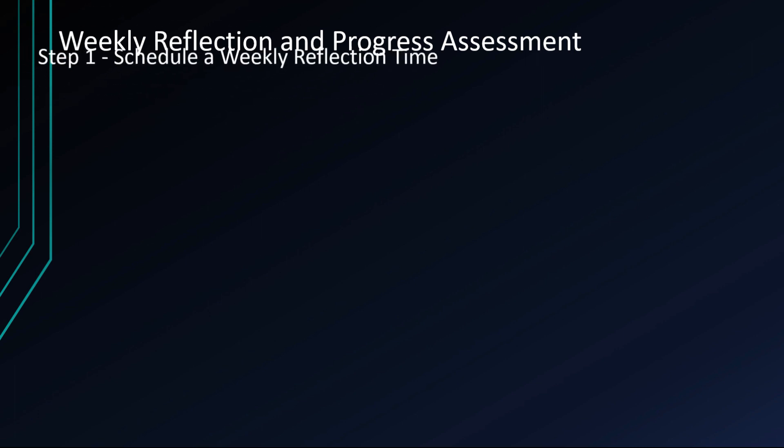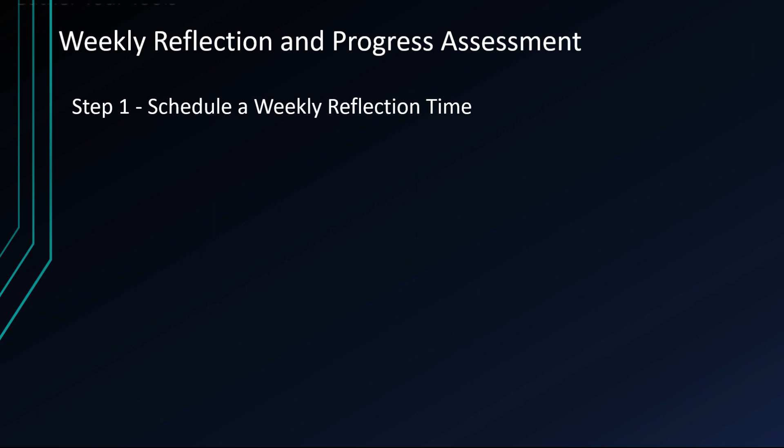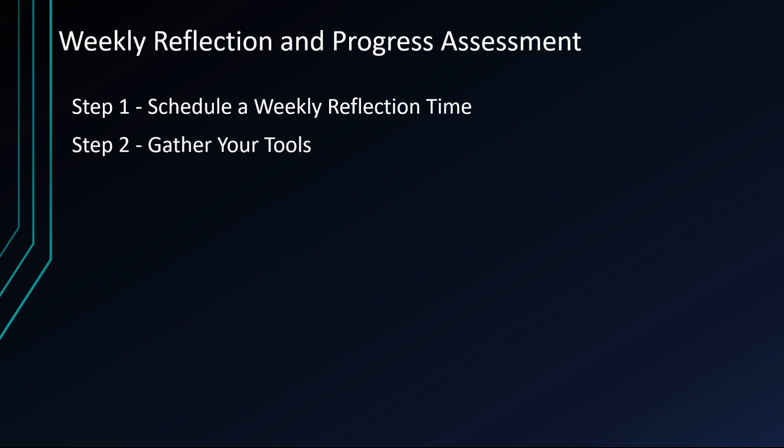Step 1: Schedule a weekly reflection time. Choose a specific day and time at the end of each week for your reflection session. It could be Friday afternoon, Sunday evening, or any other time that suits you. Step 2: Gather your tools. Have a notebook, planner, or a digital document ready to jot down your thoughts and observations during the reflection.